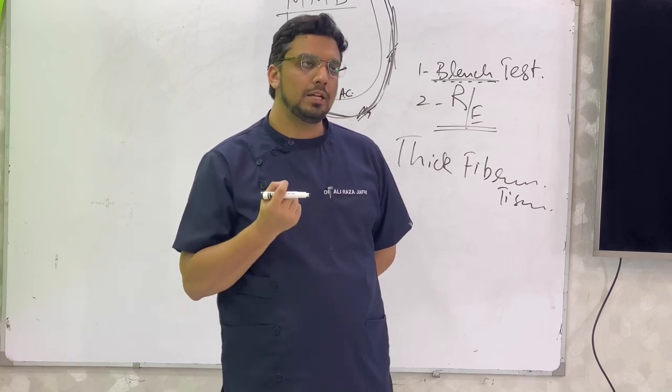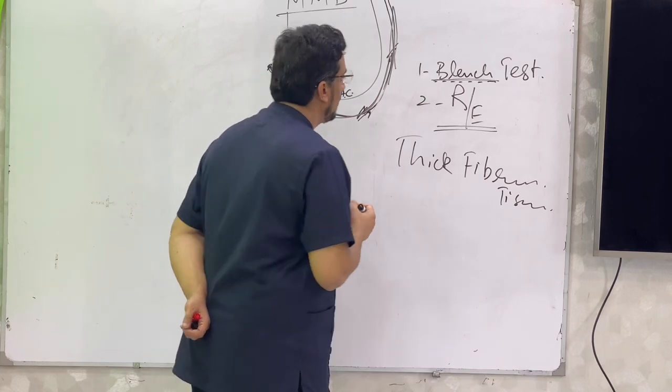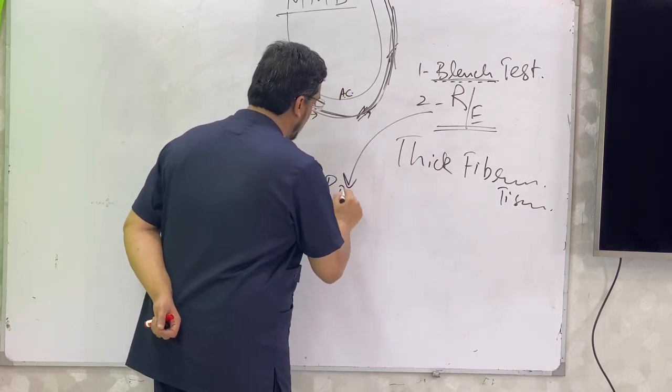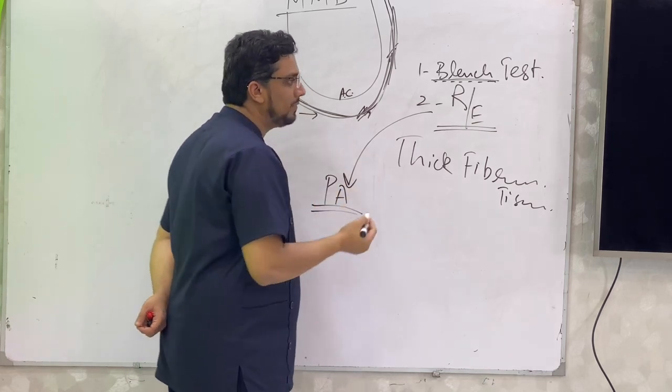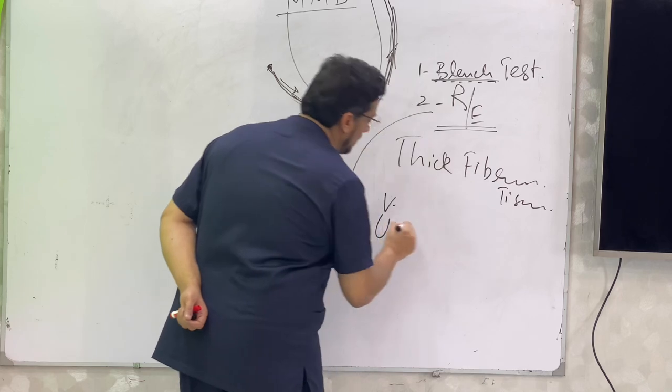So you must use the proper x-ray holders for this examination. In radiological examination typically by the periapical x-rays what we see is a V-shaped or a U-shaped notch.